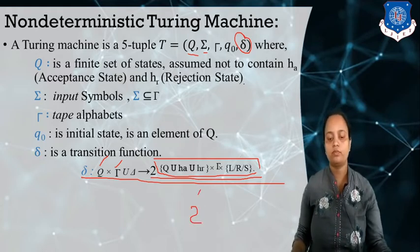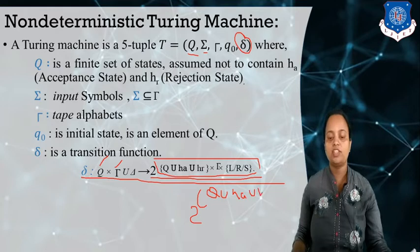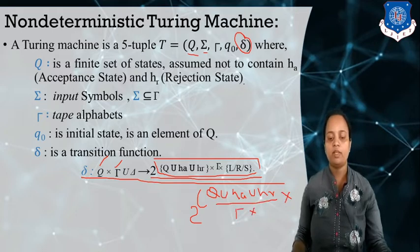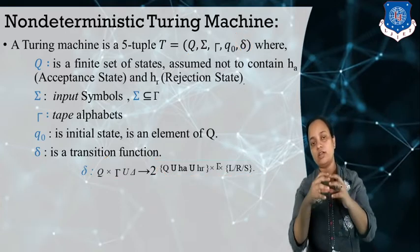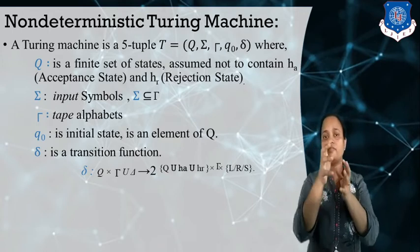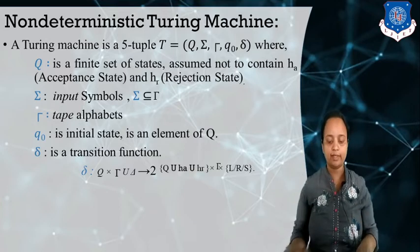The transition function for a non-deterministic Turing machine maps to the power set — 2 raised to the power of the set. The output is a subset of Q union halting-accepting state (H_A) union halting-rejecting state (H_R), crossed with the tape alphabet and directions. So in a non-deterministic Turing machine, for the current state and given set of input, it can move to more than one state. Let's take an example to get a clearer idea about this.